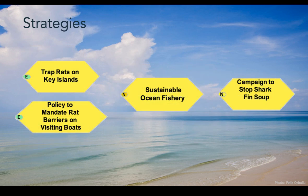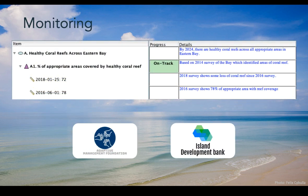There are a variety of factors that are driving or influencing the threats. The project team has identified and started implementing strategies to combat key factors in the system. These include eradicating rats from key islands where seabirds breed, in particular through trapping rats and mandating rat barriers on visiting boats, developing a sustainable ocean fishery for local fishermen, and collaborating with an international conservation organization to combat the demand for shark fin soup. This is an ongoing project where the team is monitoring both the status of its conservation targets and the effectiveness of its conservation strategies.